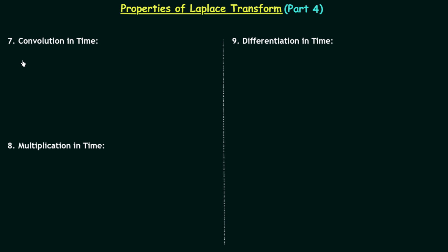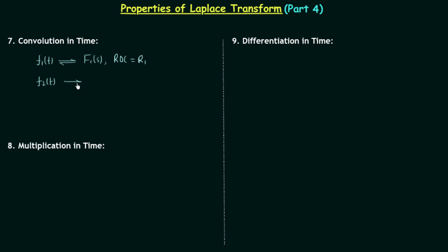Let's start with property number 7. The proof will be similar to the convolution in time property of Fourier transform. Let's say we have two time domain signals f1(t) and f2(t), where the Laplace transform of f1(t) is F1(s) with region of convergence r1, and the Laplace transform of f2(t) is F2(s) with region of convergence r2.